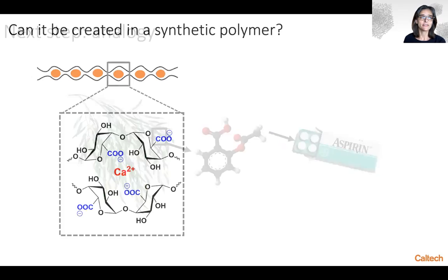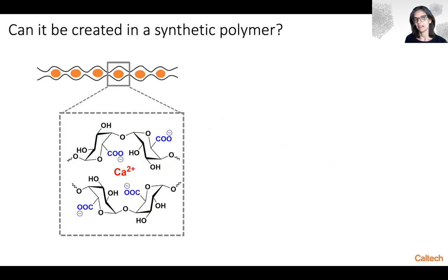So we asked ourselves, is it possible to create pectin analogues in a synthetic polymer by reproducing the motifs of the egg box structure that we identified to be responsible for the temperature sensitivity? In this slide here, I'm highlighting the egg box structure in more details, showing two fundamental components of the egg box that determine the interaction with the divalent calcium ions responsible for the temperature sensitivity, which are the hydroxyl and carboxylate groups.